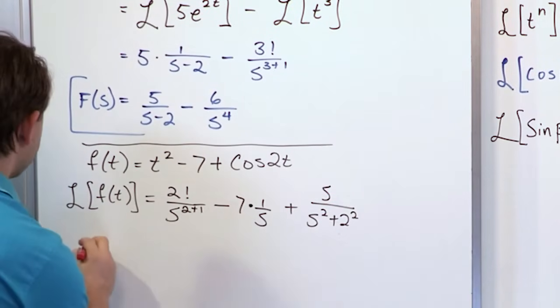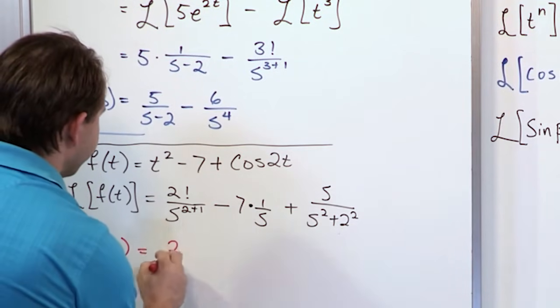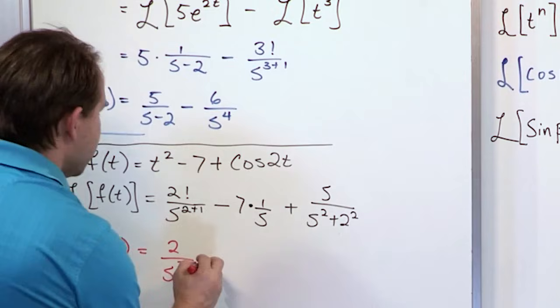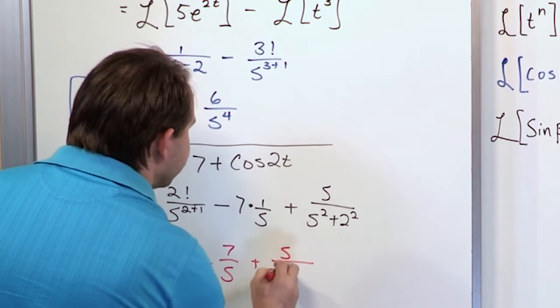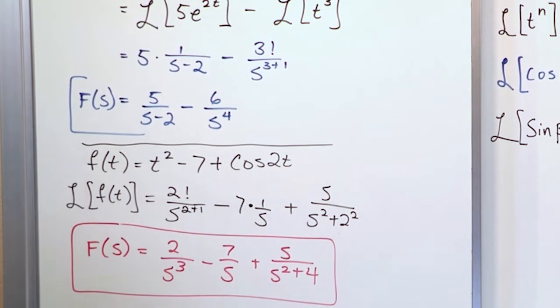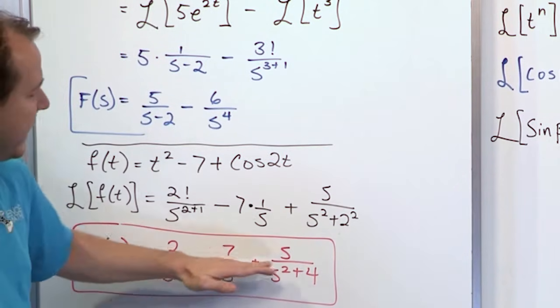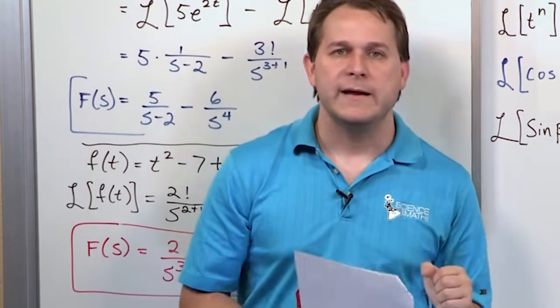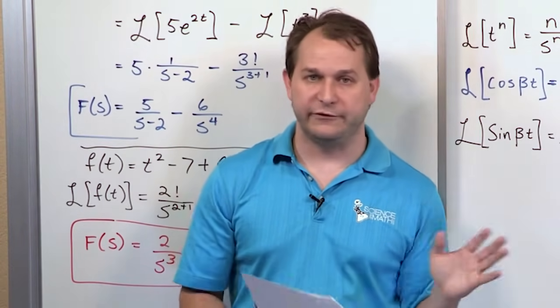And then the plus sign links it here. And now you have cosine 2t. So here's cosine. So you have s over s squared plus beta squared. So that's going to be 2 squared. So it's going to be s over s squared plus 2 squared. And so the final answer is f of s. Here, 2 factorial is just 2. s cubed is what you'll have on the bottom. Minus 7 over s for the middle term plus s over s squared plus 4. This is the final answer. 2 over s cubed minus 7 over s plus s over s squared plus 4. Notice again, this is a pure function of time. We have transformed into a pure function of s. If you end up with a Laplace transform that has anything other than just s's and numbers, you've done something wrong. So that's just something you need to think about.